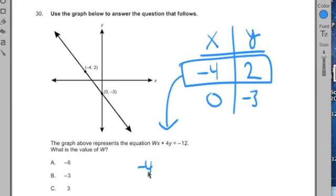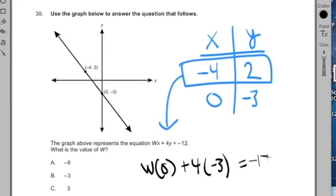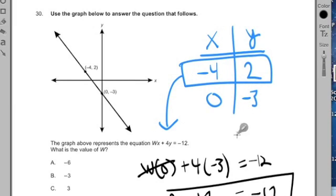Now, if you had chosen 0, negative 3, what would have happened is you would have gotten w times 0 plus 4 times negative 3 equals negative 12. So you used the y-intercept. And I said, don't do it. Well, that's going to get you negative 12 equals negative 12. Because the 0 crosses out the w, cancels it. This is a true statement. So this line, this 0, negative 3 is on the graph. But the thing is, it doesn't help you solve for w.